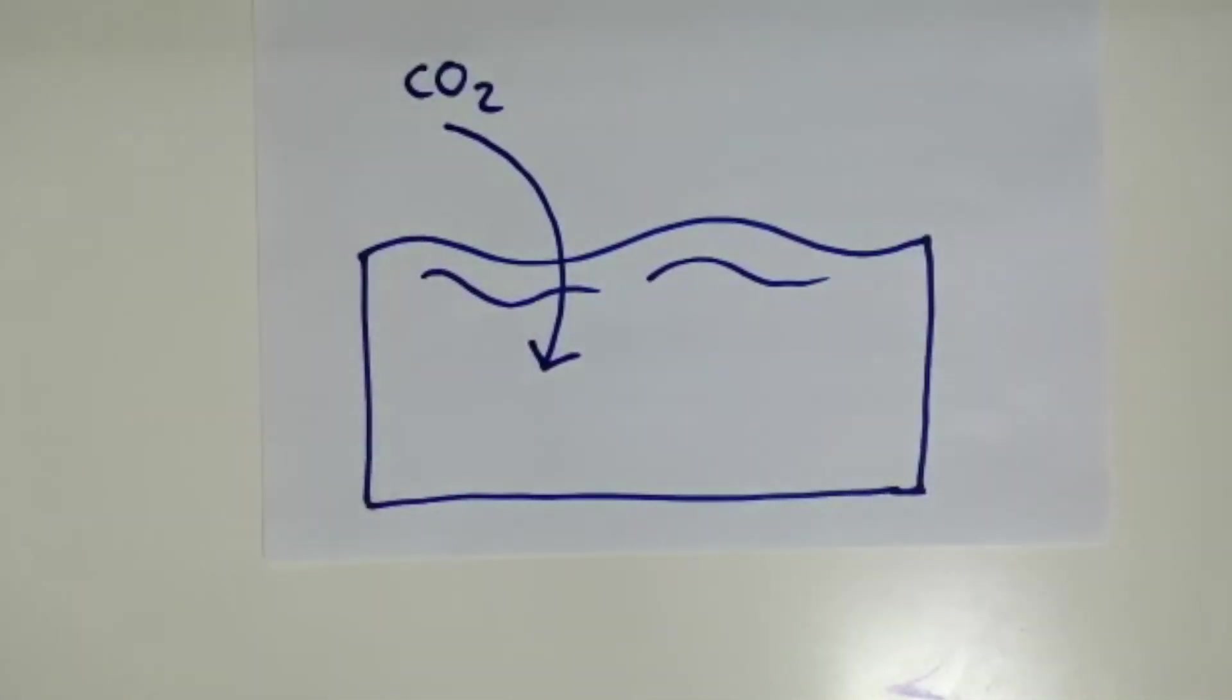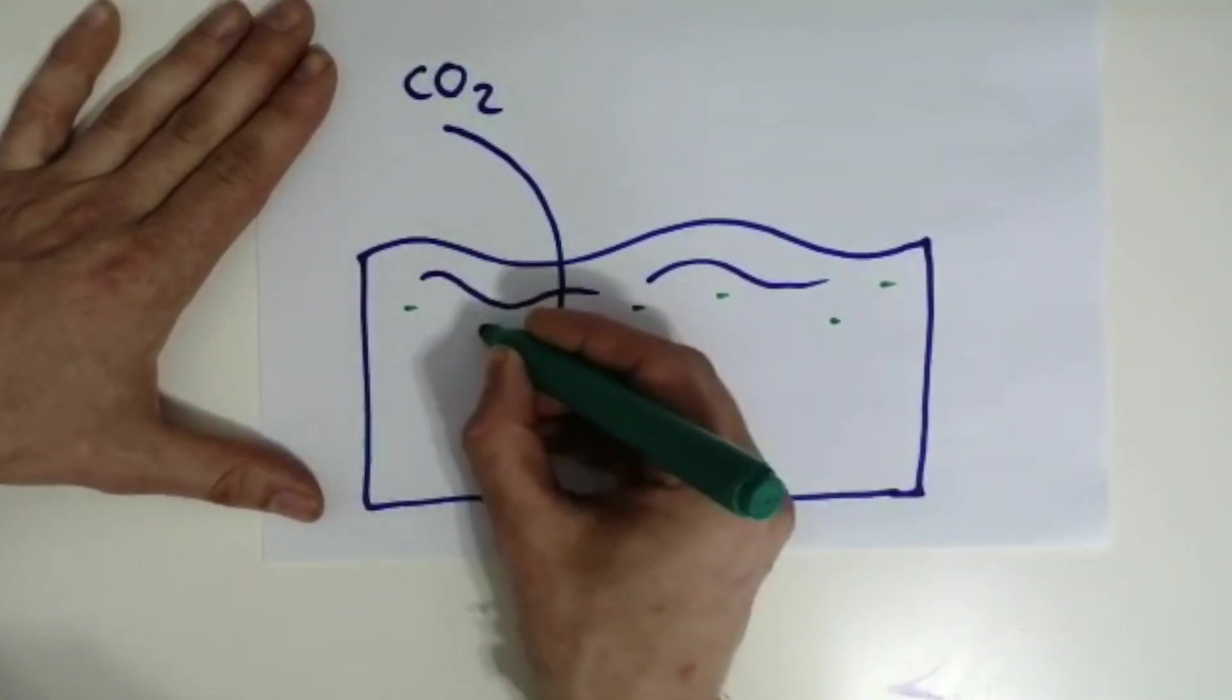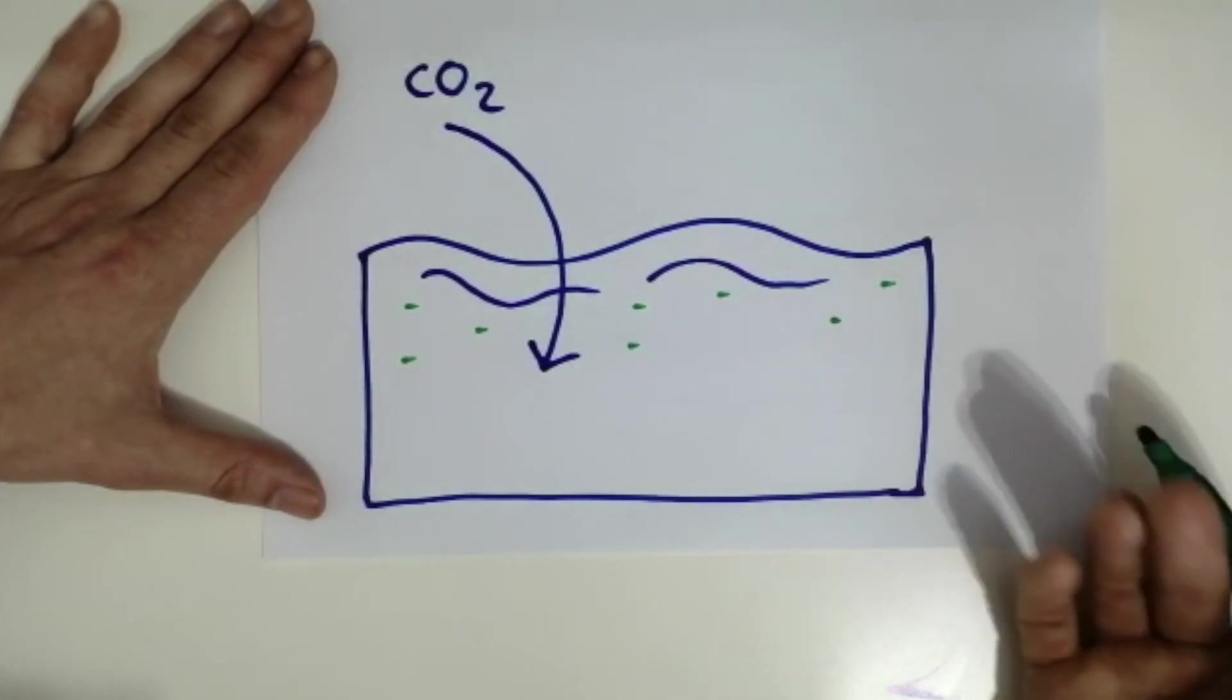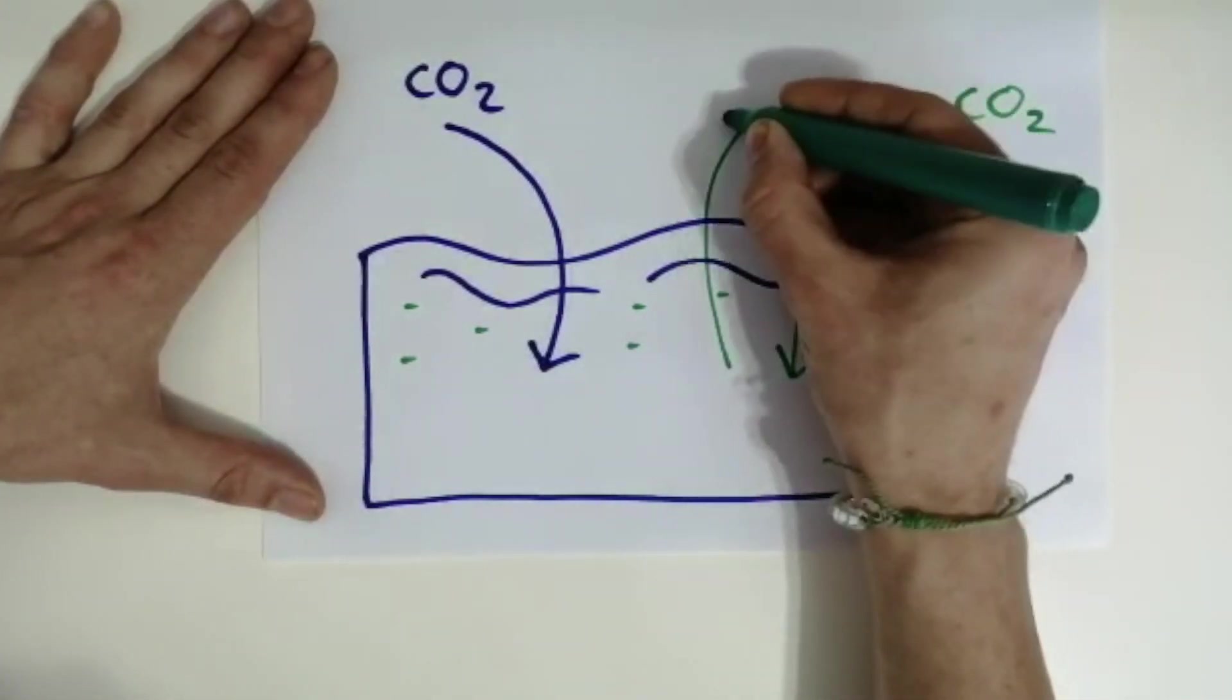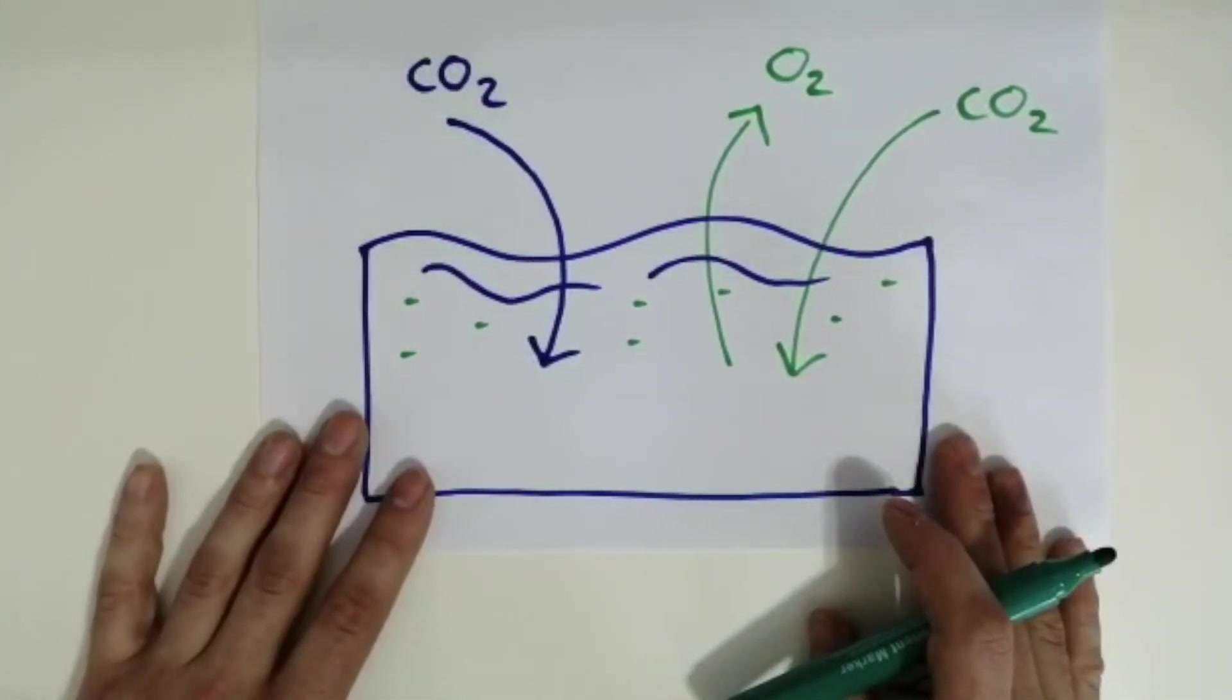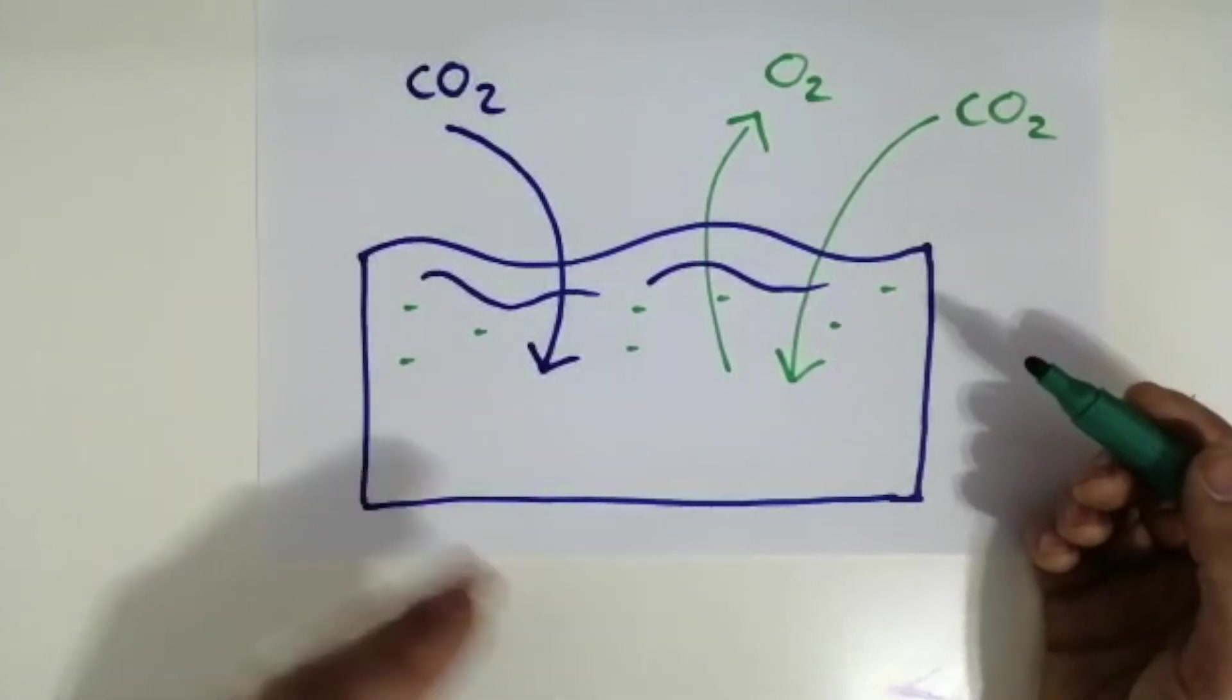As well as carbon dioxide dissolving in the oceans, eventually we started to get the evolution of small photosynthesizing microorganisms. Tiny organisms that carried out photosynthesis and that took carbon dioxide in from the atmosphere and gave out oxygen. So that's where the oxygen came from.